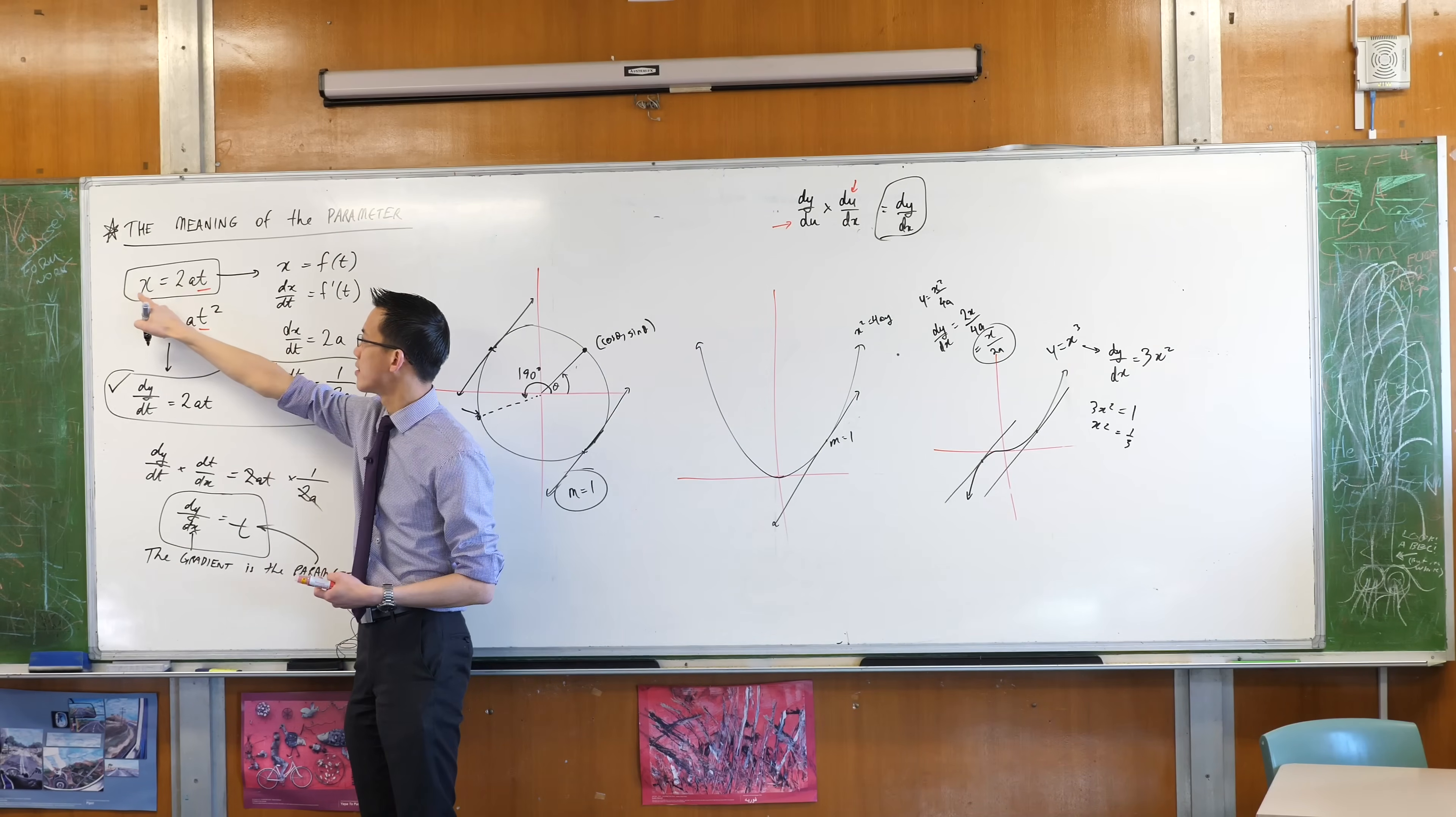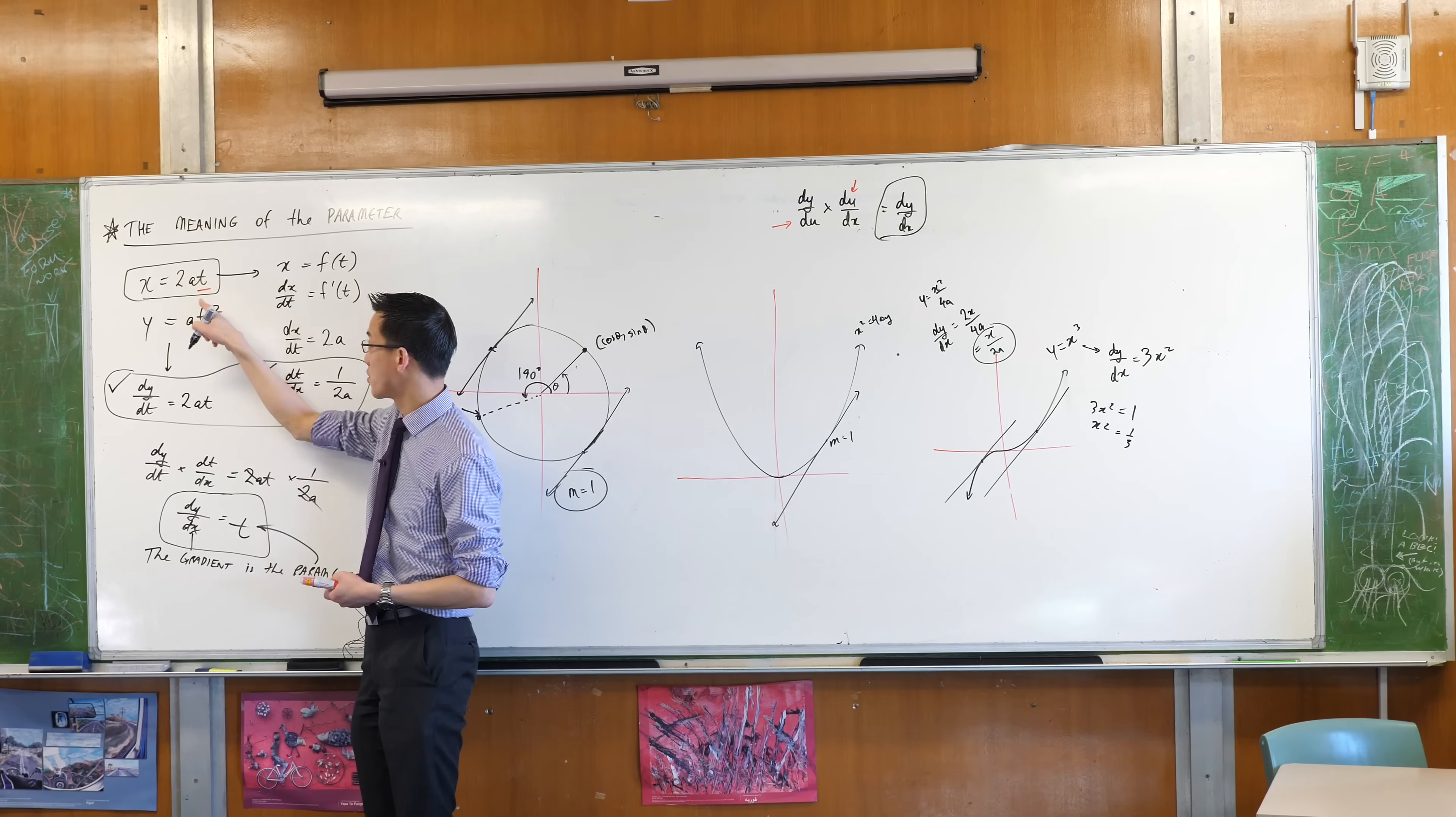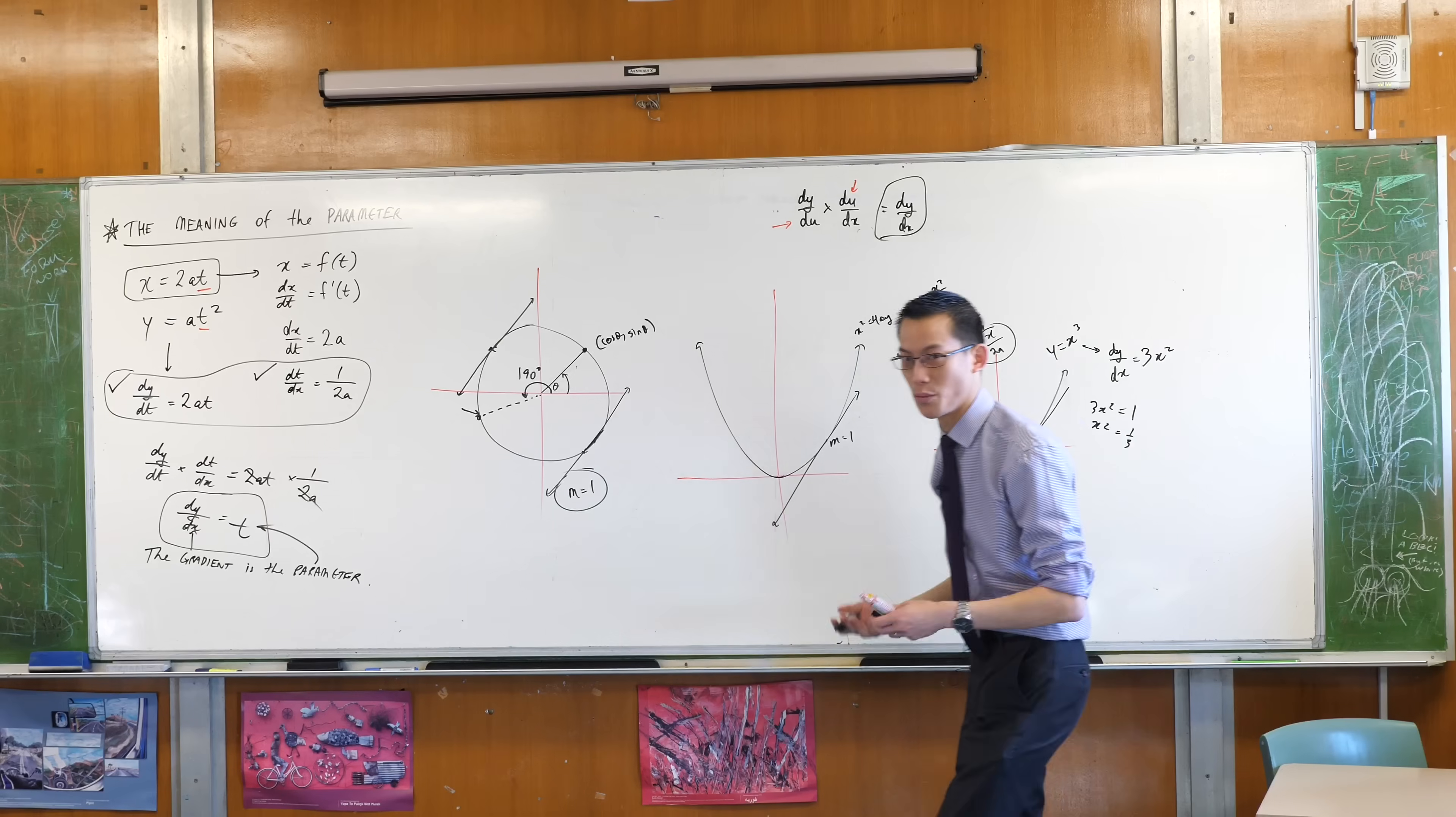But look, x on 2a, you divide both sides by 2a, you just get t. So that's just another way of saying it without the chain rule.